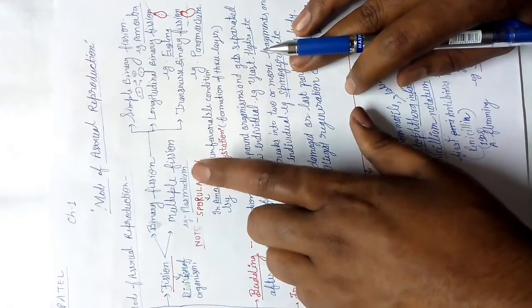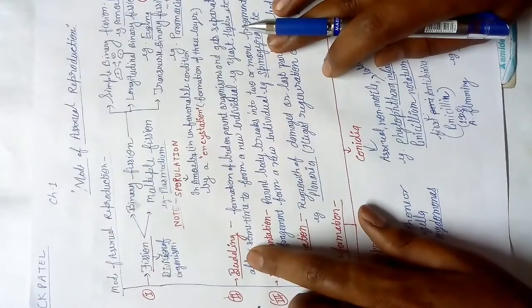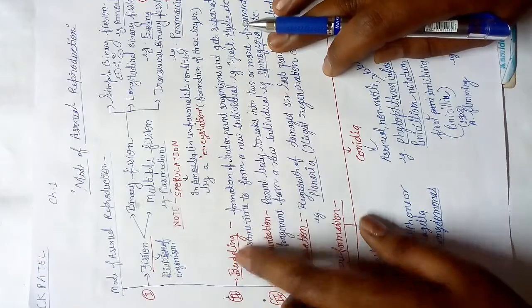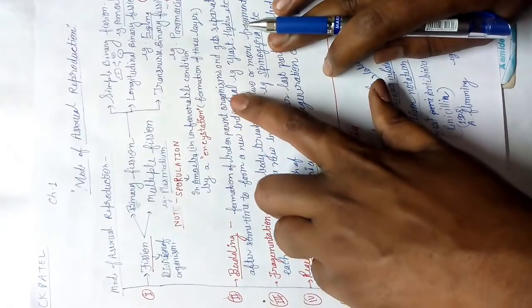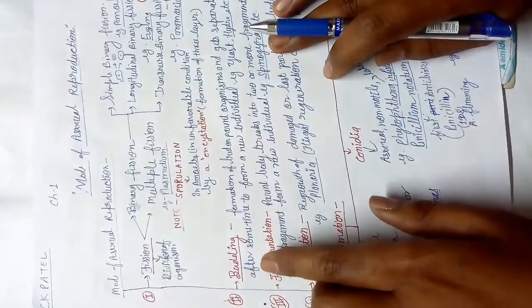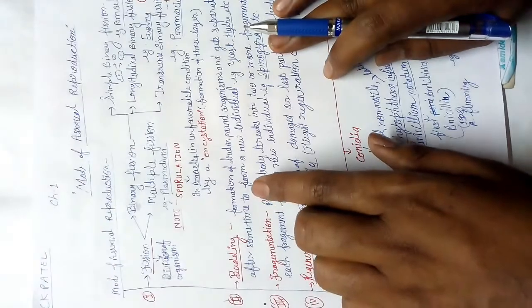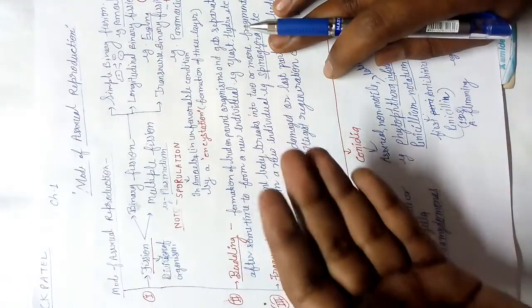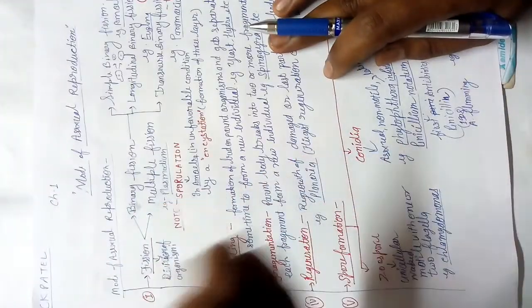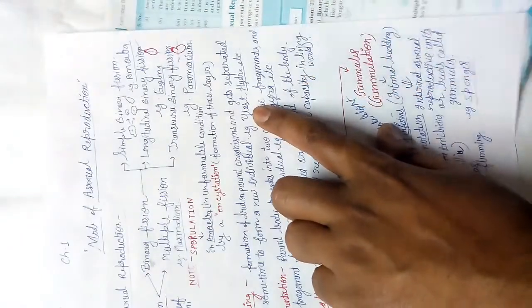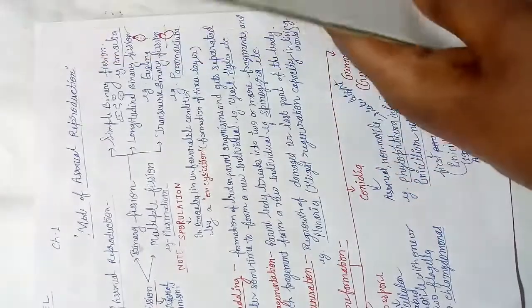Next is budding. A bud forms on the parent organism, gets separated, and after some time attaches somewhere or develops into a new organism independently. Examples of budding are yeast and Hydra.